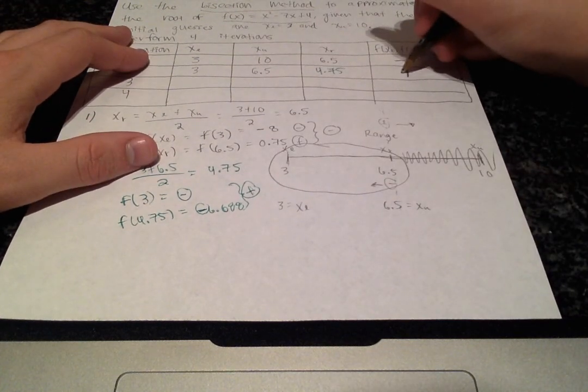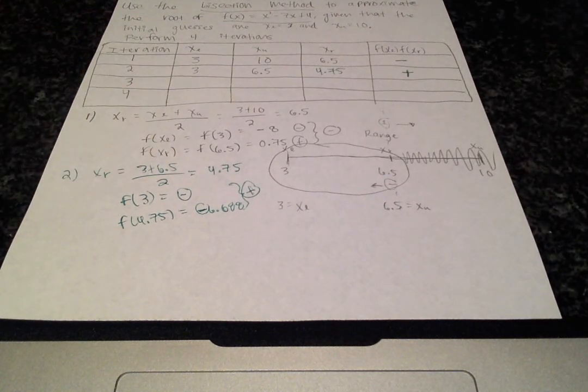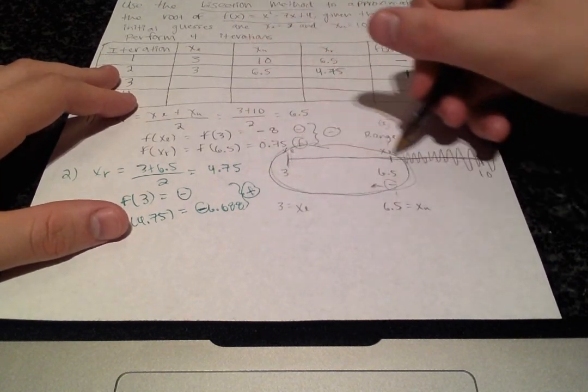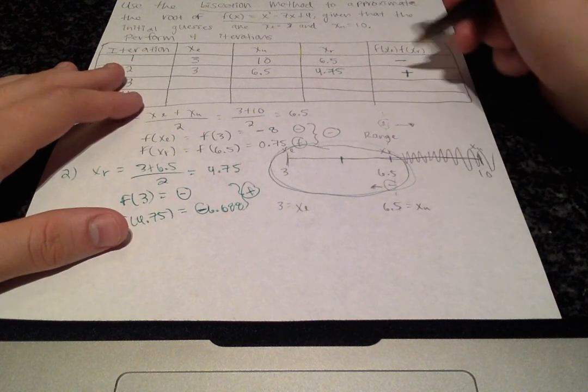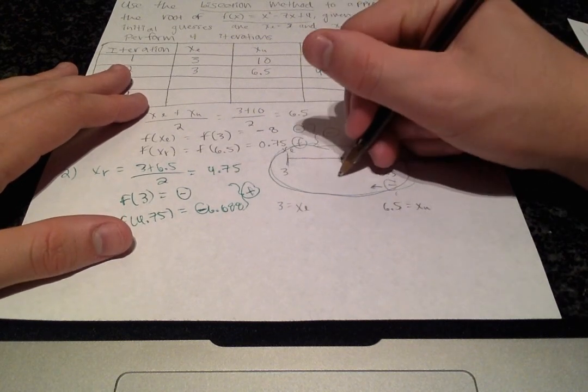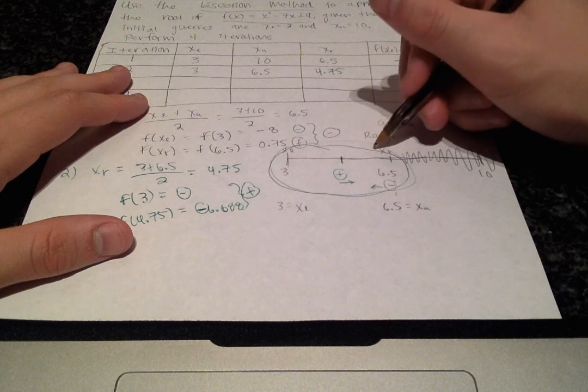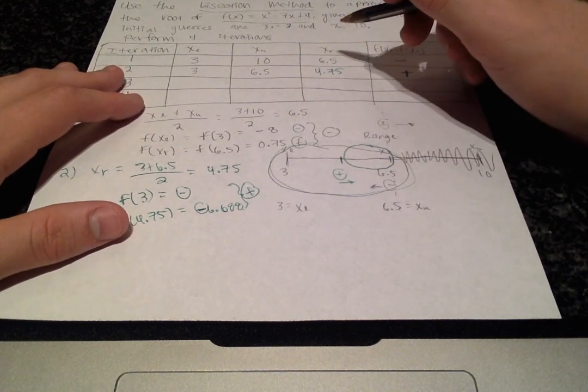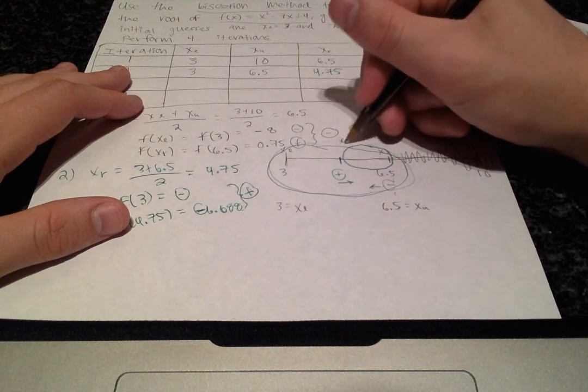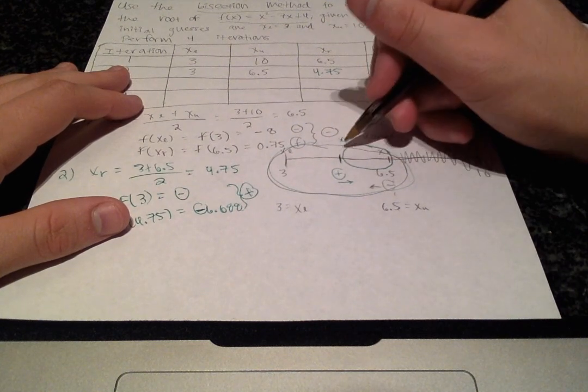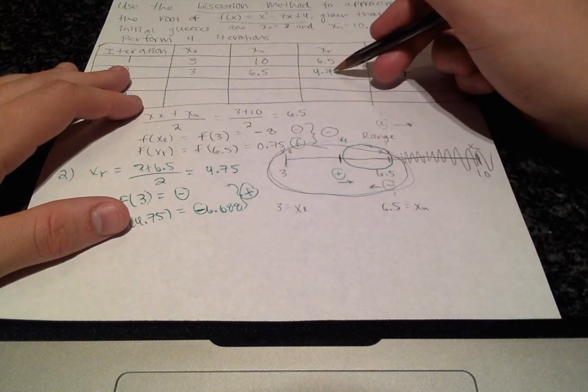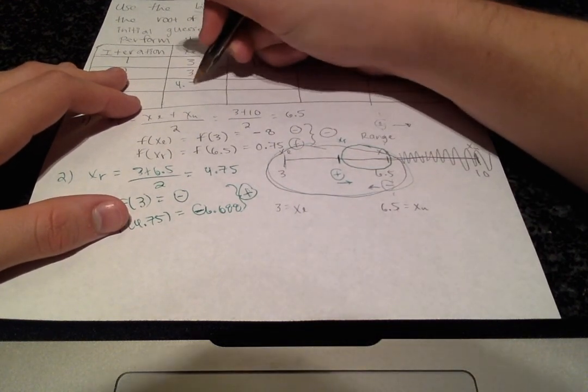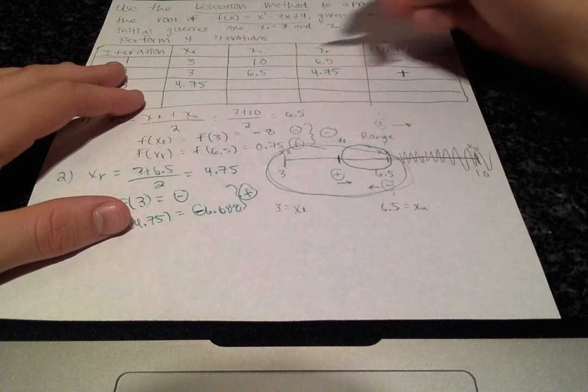The product of two negatives will be a positive value. And now this range, once again, has been narrowed even further. We've cut it in half, and the positive sign indicates that we'll be searching to the right. So this is now our new range. So the xr value is now our lower limit, 4.75, and the upper limit is unchanged.